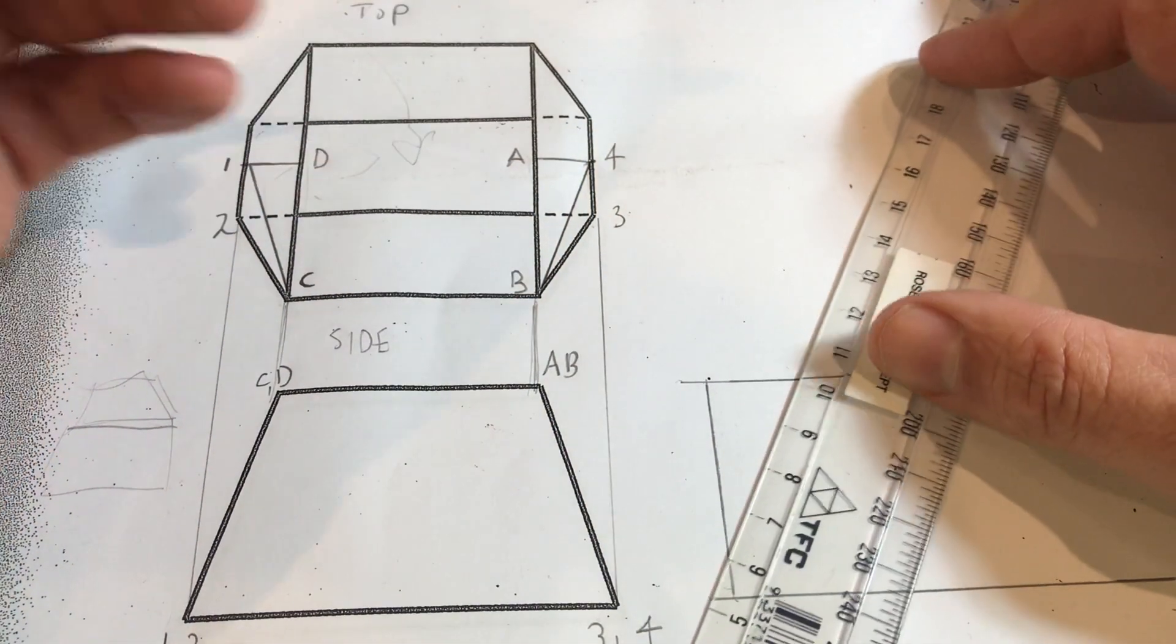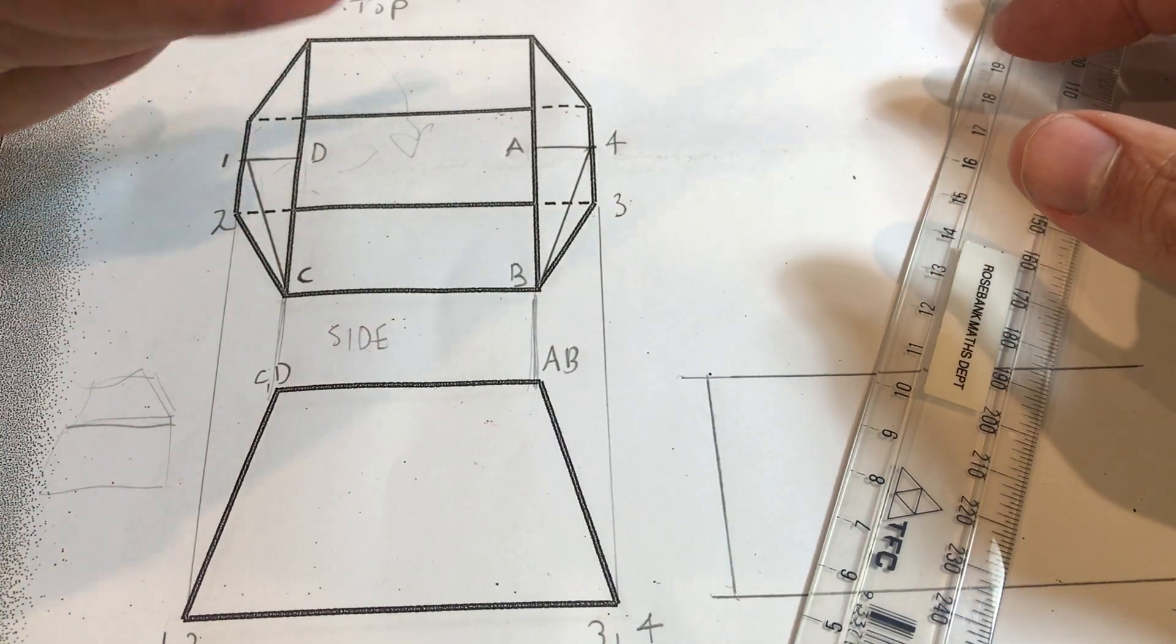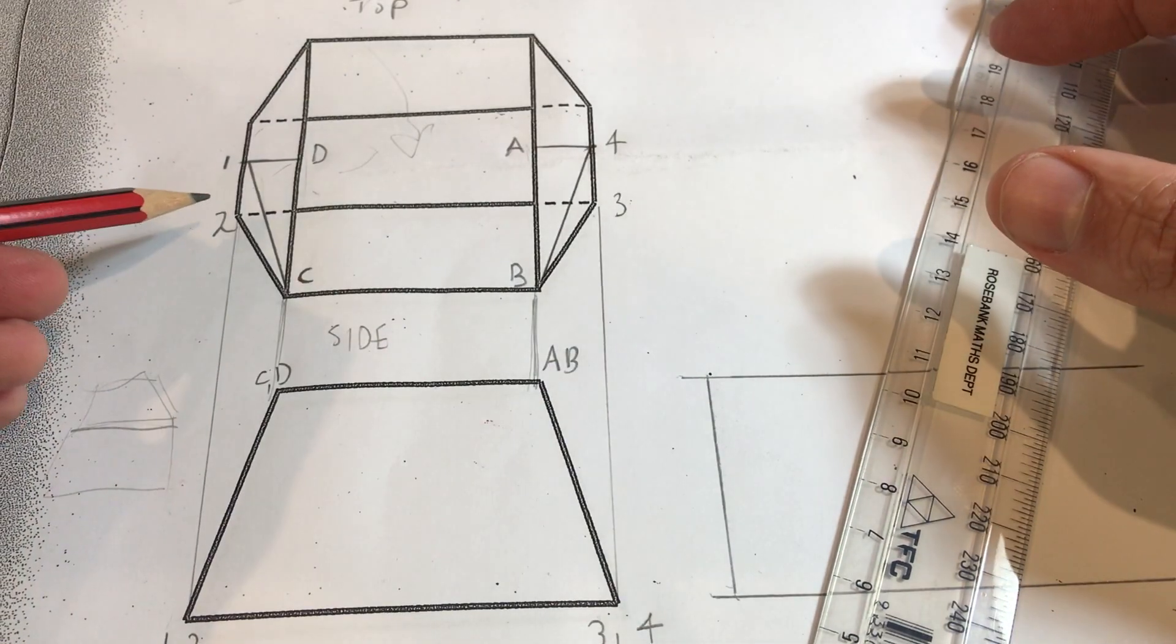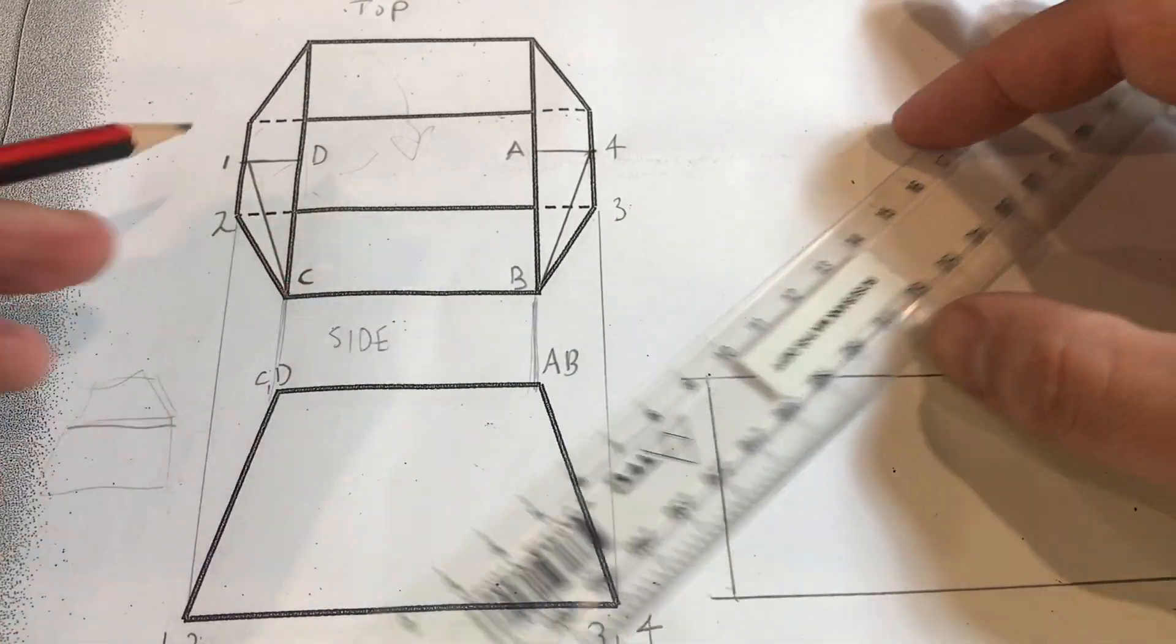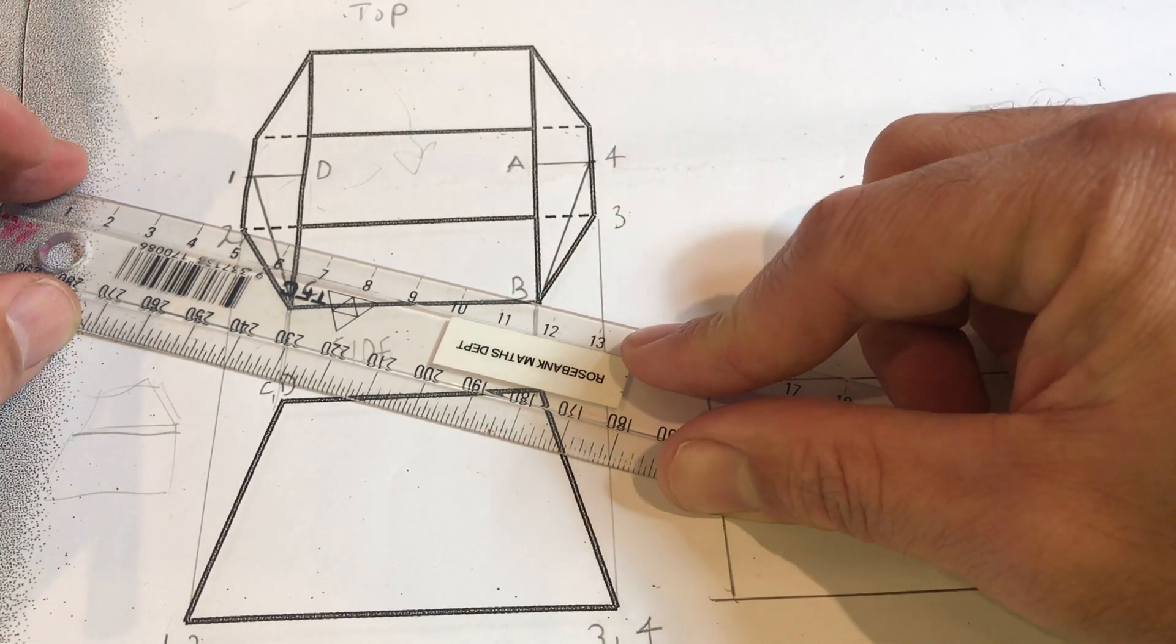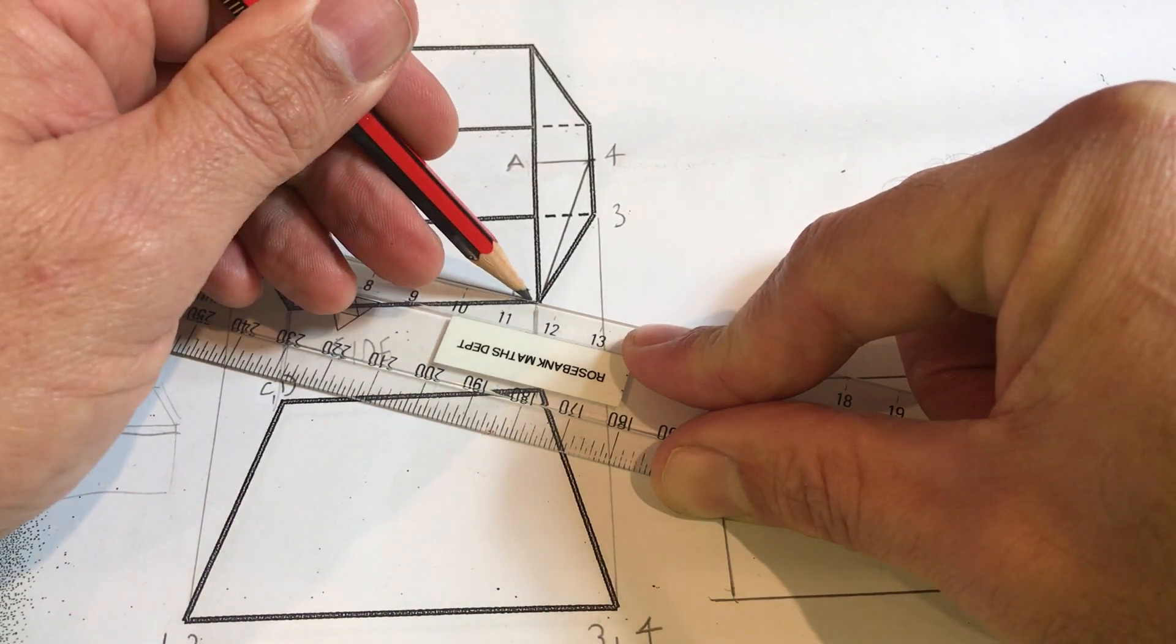And then the only other one that we've got here is this bottom plane here which we know is inclining sort of towards us. So what we need to do there is we're going to make a 2b triangulation. So we're triangulating inclined planes in the part of the half transition that the planes are actually inclined.